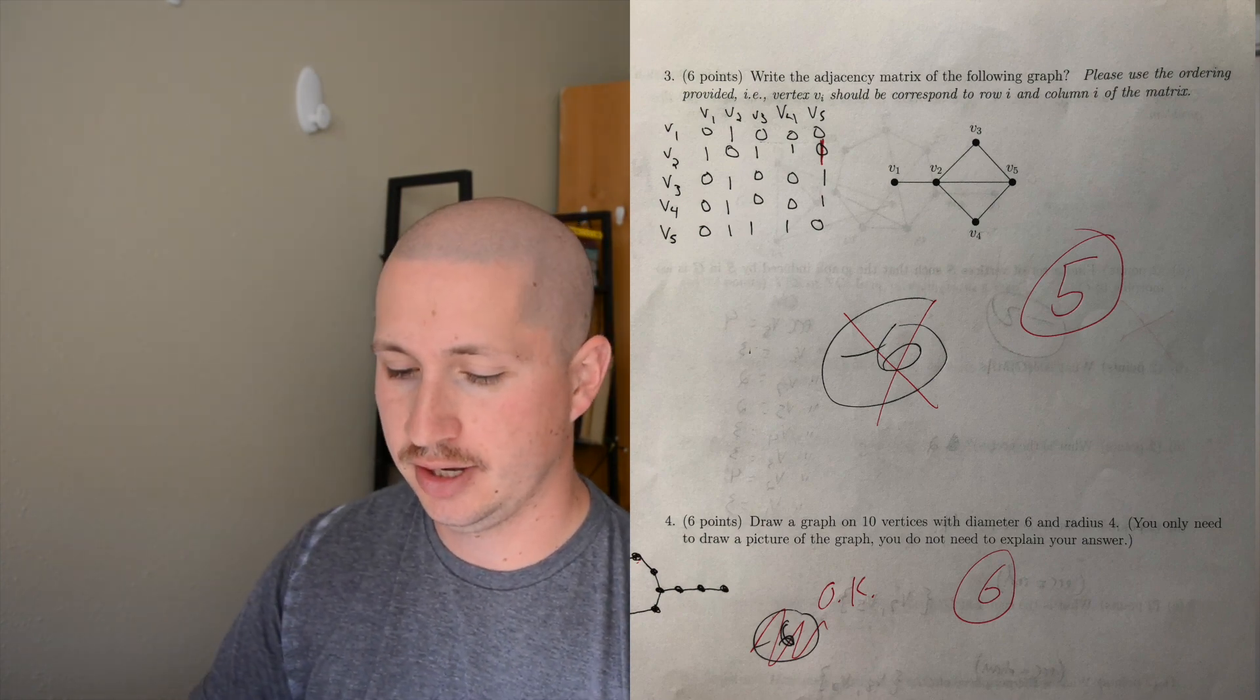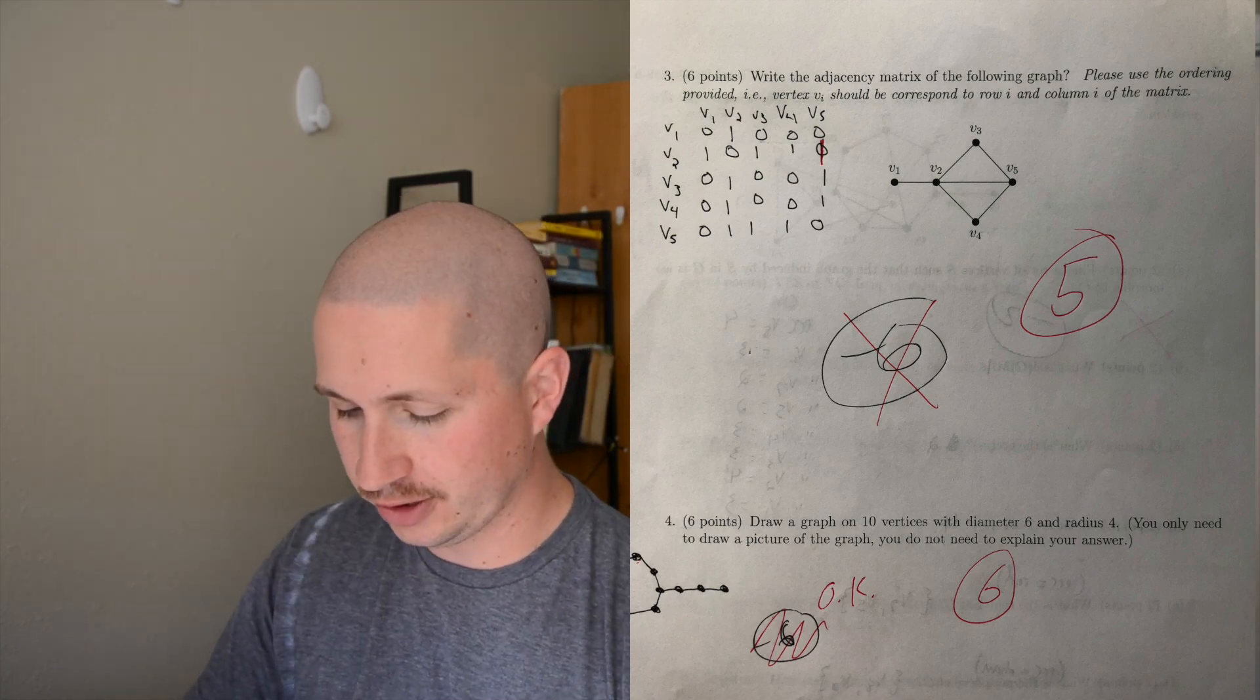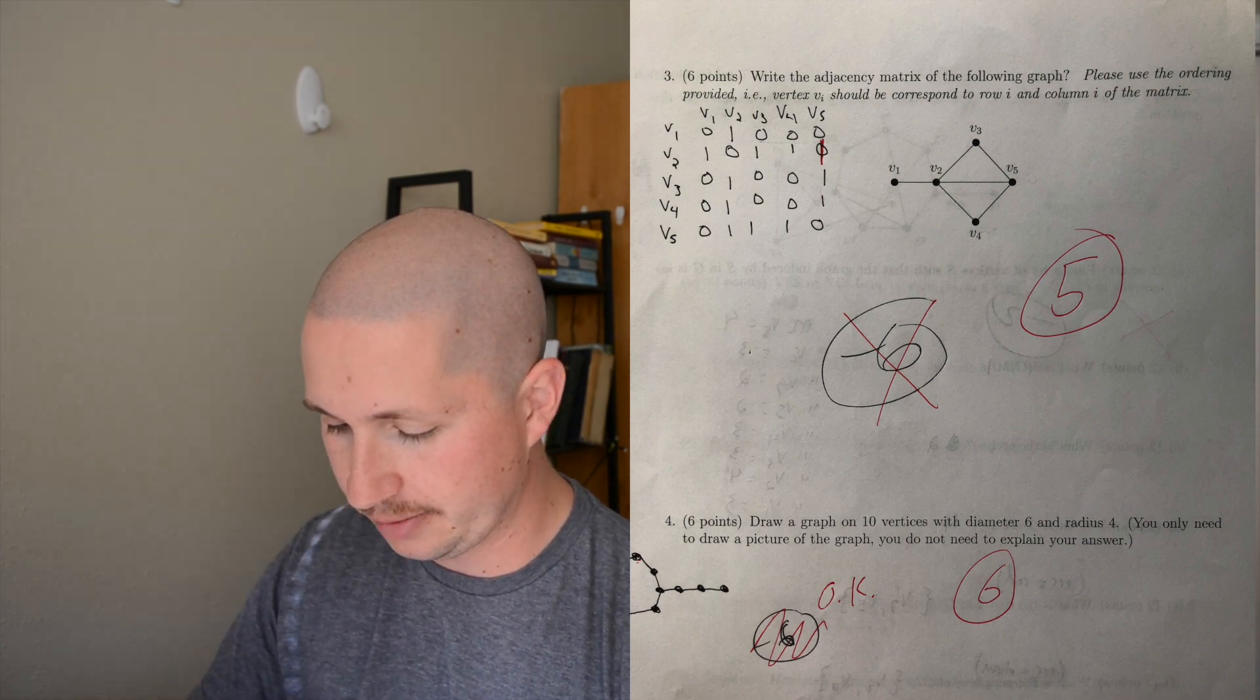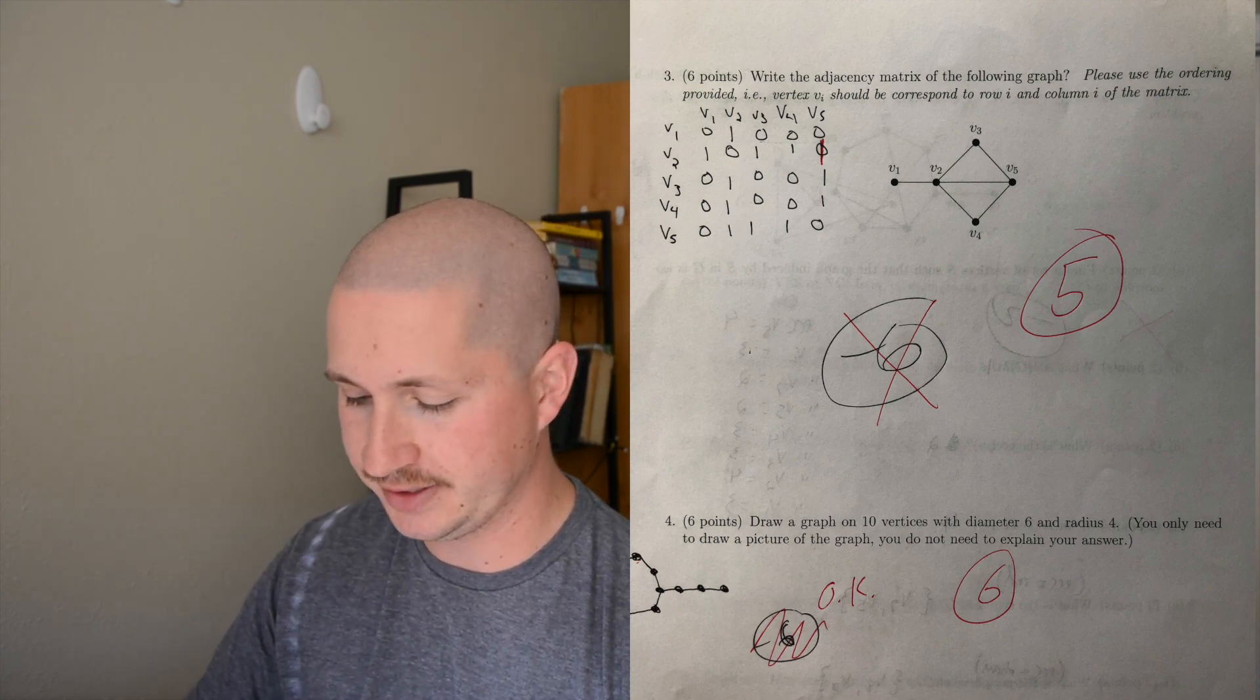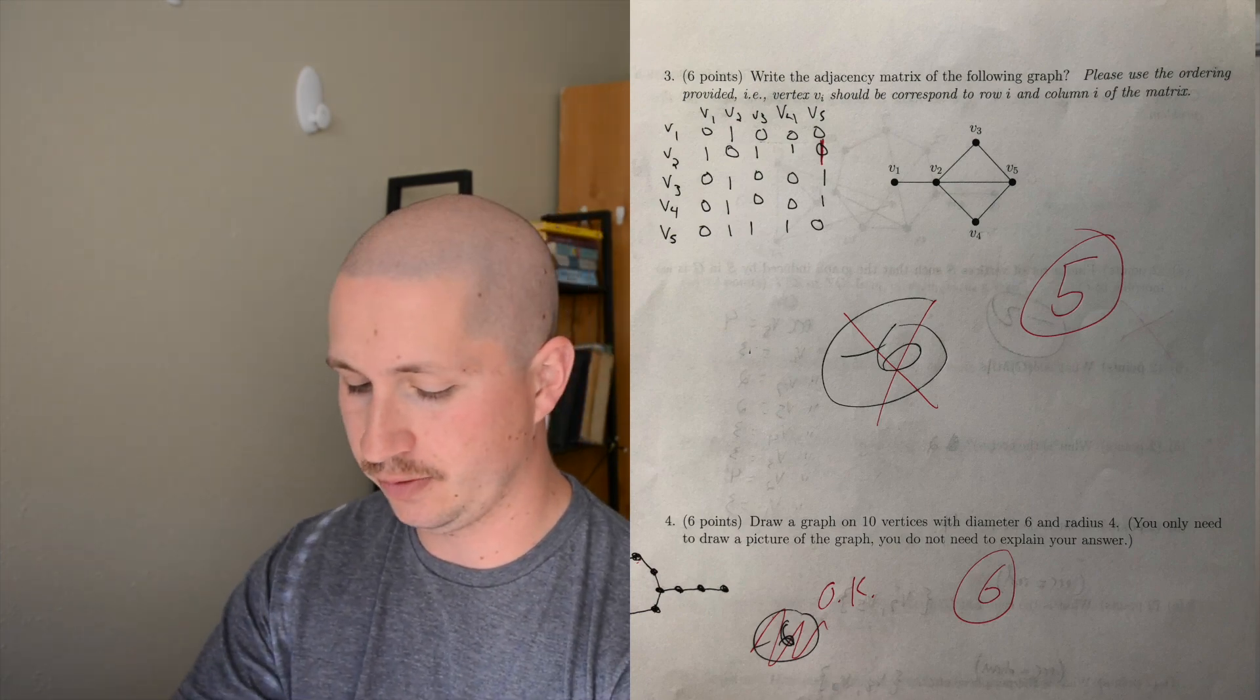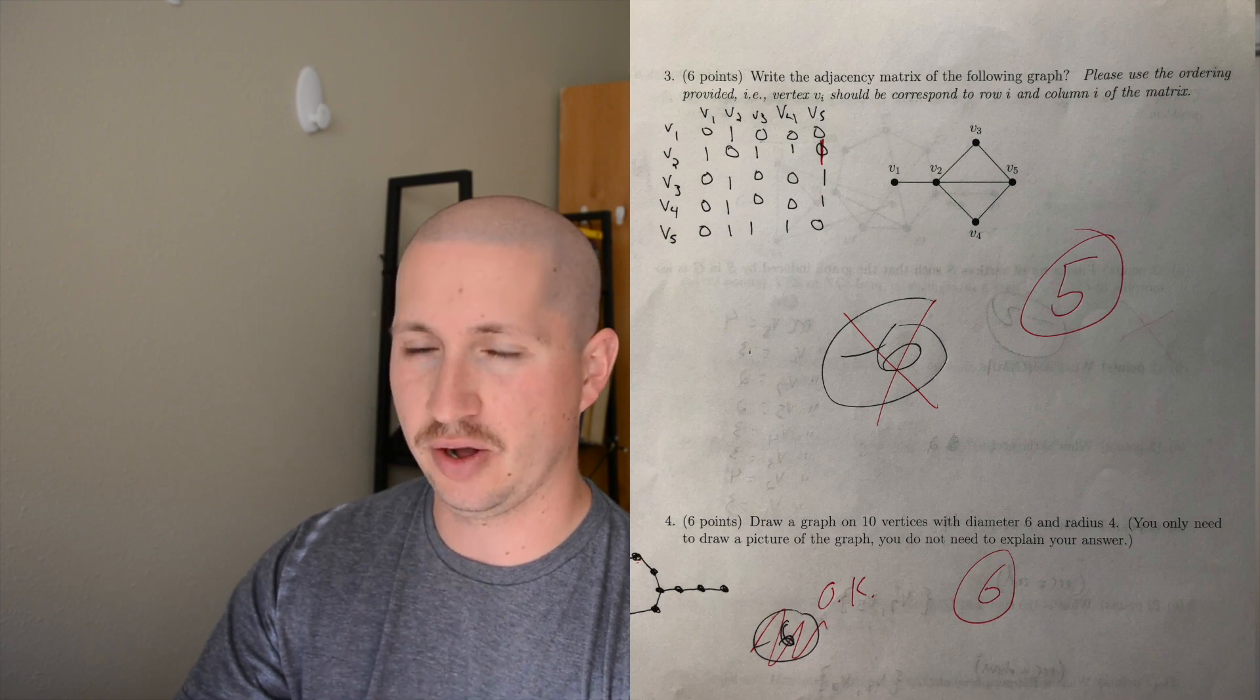Number four: draw a graph on ten vertices with diameter six and radius four. You only have to draw a picture, you don't need to explain yourself. Explaining isn't a big deal because all you would have to do is define what the eccentricity is, then the diameter and the radius. That would take a little bit of extra time but doesn't take much hard thought.